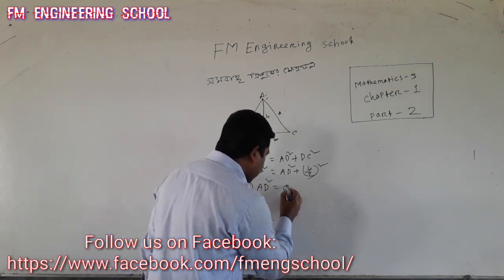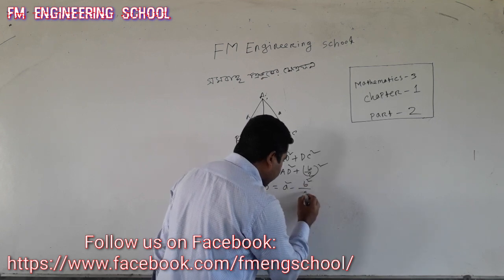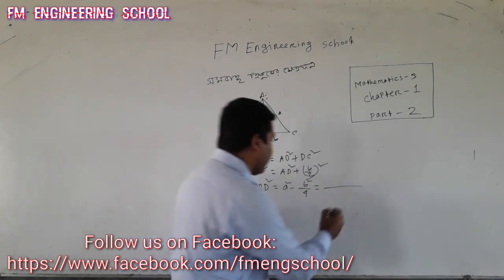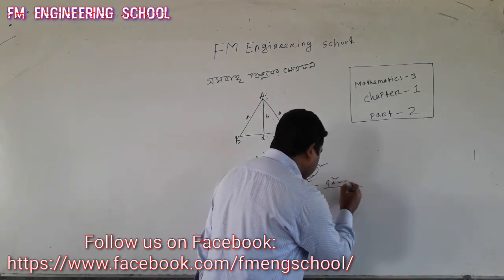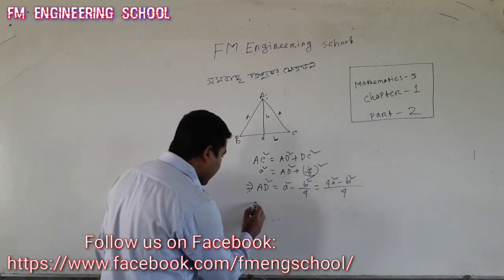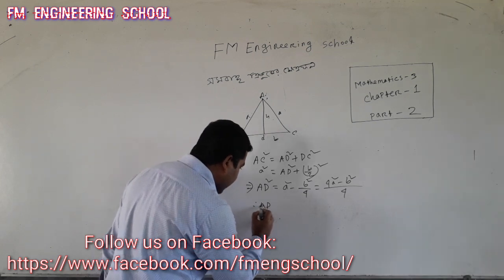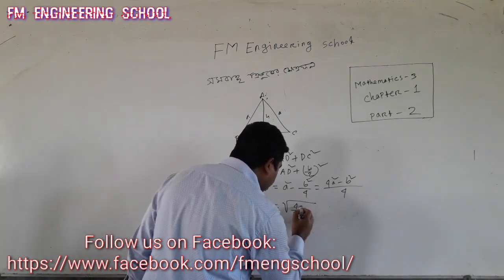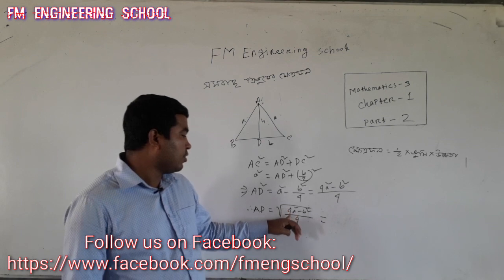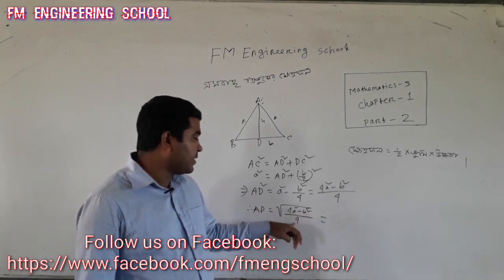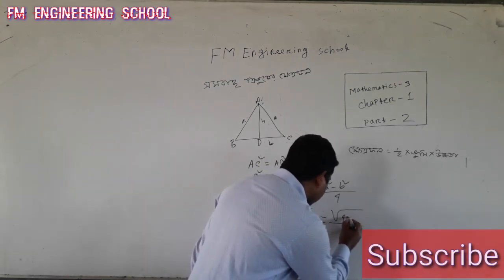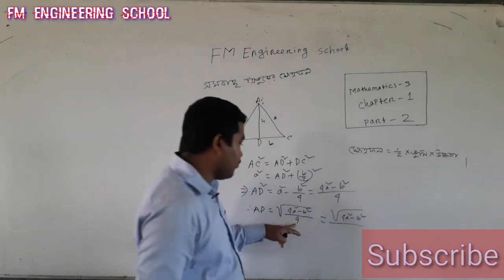If we have two values, we will have four values, and then we will have four A square minus B square. So we will put this into the box. The first row: AD is a root of four A square minus B square plus four.